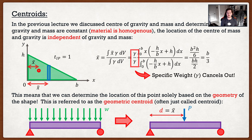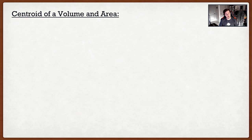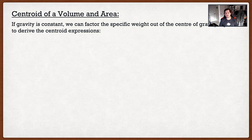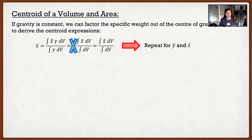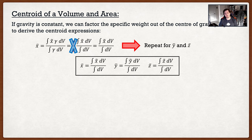We have basically three different formulas depending on what you're after: the centroid of a volume, of an area, and of a line. The most common one is the centroid of an area. If gravity is constant we can factor out specific weight from the center of gravity equation, which gives us our centroid expressions. For x-bar, if specific weight is constant we factor it out — we have gamma over gamma, which cancels — leaving the centroid expression. We repeat this for y-bar and z-bar to get the centroid in terms of volume, integrating with respect to volume.